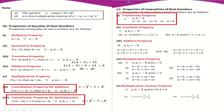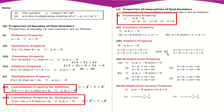Trichotomy Property: اگر ہمارے پاس دو real numbers a اور b ہیں تو تین میں سے صرف ایک condition ہوگی — یا تو a < b ہوگا، یا a = b ہوگا، یا a > b ہوگا۔ یعنی تین conditions میں سے ایک ضرور ہوگی اور باقی نہیں — یہ Trichotomy Property ہے۔